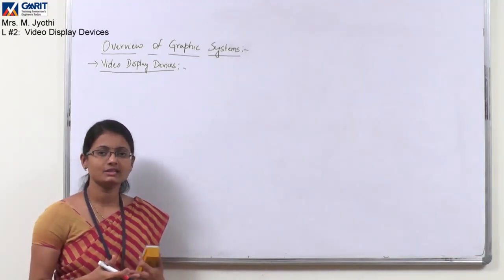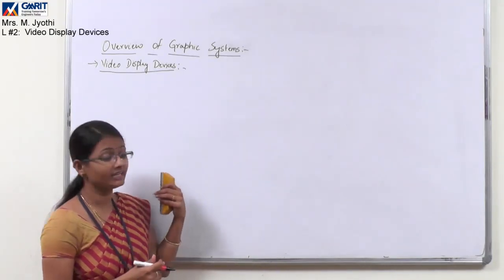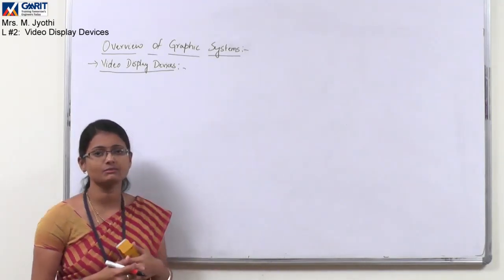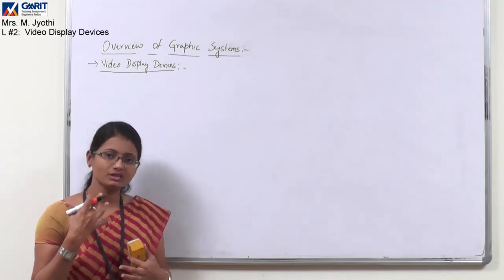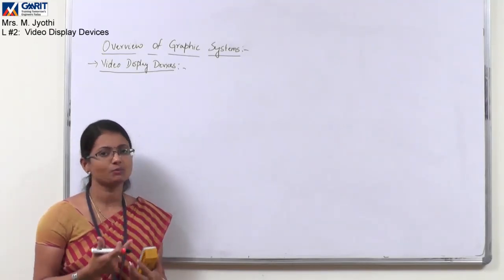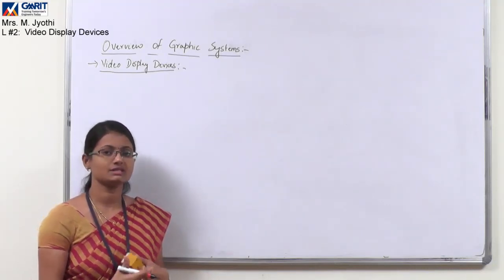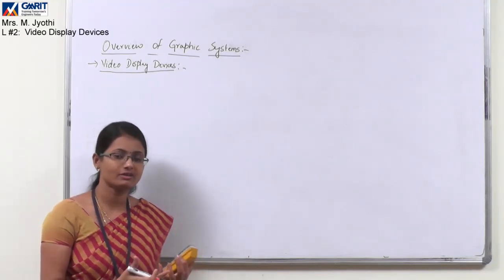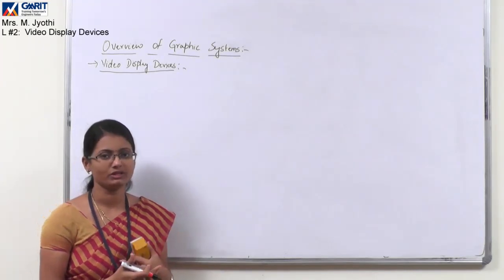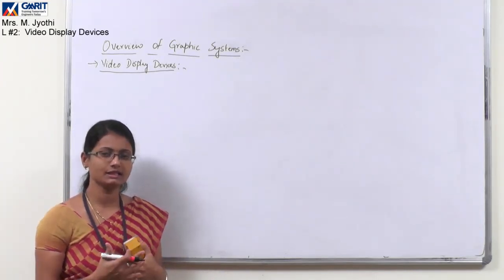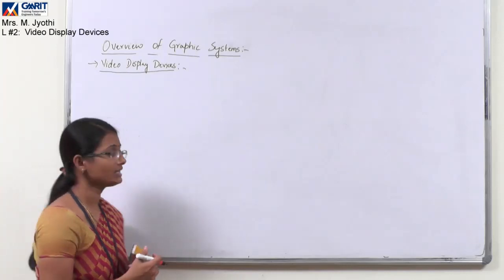We know that the basic or primary output device for any graphic system is our video monitor. The operation of this video monitor depends upon the basic CRT model only. So let us discuss in detail about the working of that CRT.